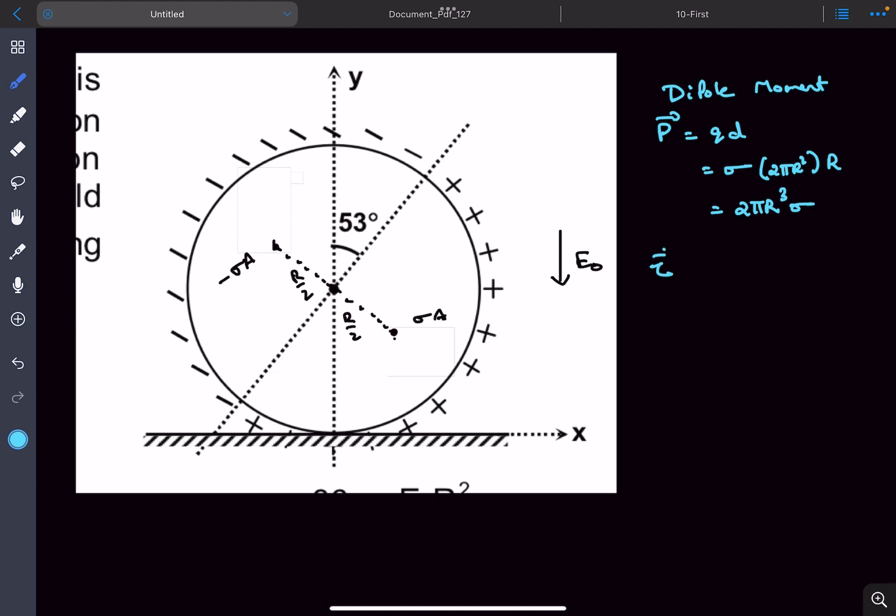The torque due to a dipole in a uniform electric field is p⃗ × E⃗. Since this is the direction of the dipole moment and this is the electric field direction, p⃗ × E⃗ gives a direction into the plane, so the torque is clockwise.